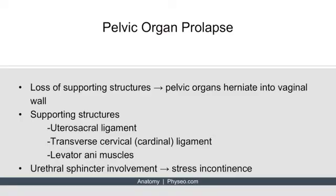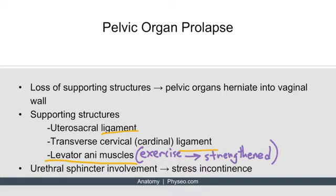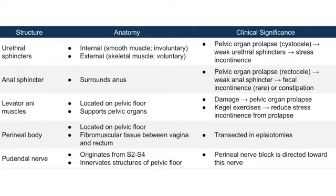Going back to this slide, the levator ani muscles are important supporting structures for the pelvis. Of the three supporting structures listed, the levator ani muscles are the only ones that are muscles — the other two are ligaments. This is a very important point, because muscles, unlike ligaments, can be strengthened through exercise — specifically Kegel exercises. So if a patient has stress incontinence from pelvic organ prolapse, you could recommend Kegel exercises to reduce it.